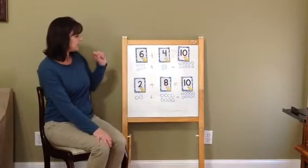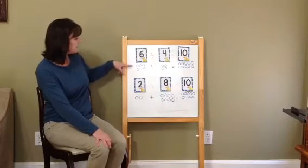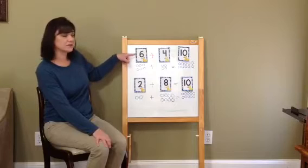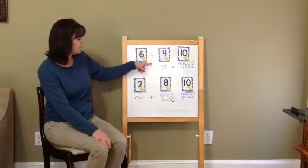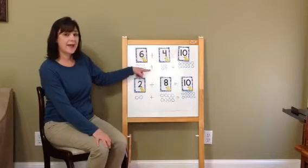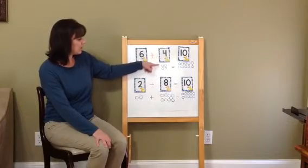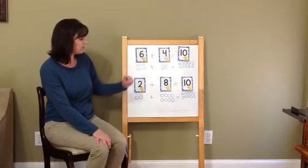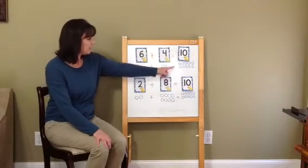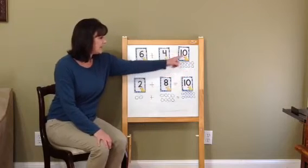So let's look at this. I drew 6 circles to represent the number 6. I used the plus sign to represent that we're adding 4 more. So I drew 4 circles to represent the number 4, which equals 10 circles.